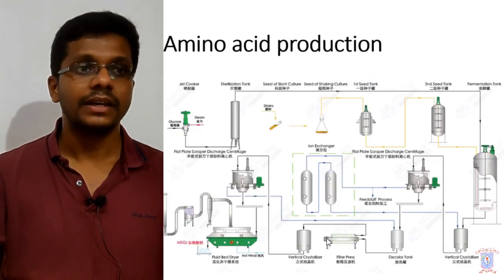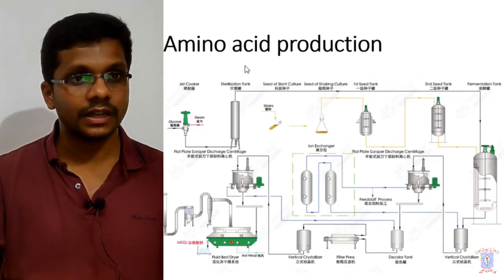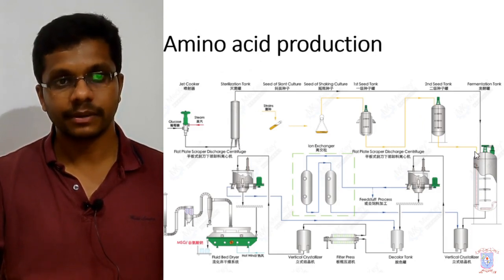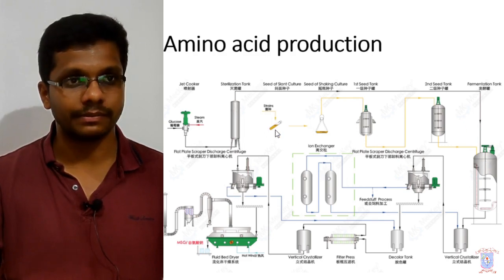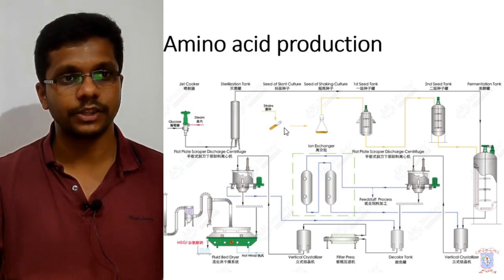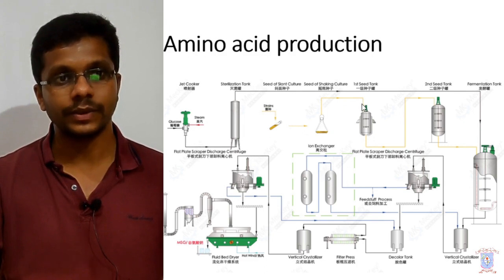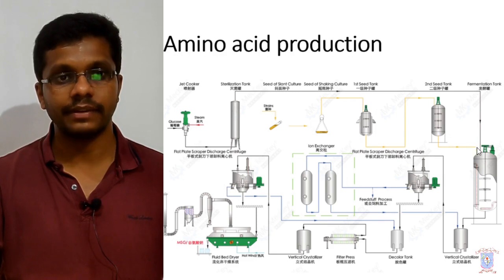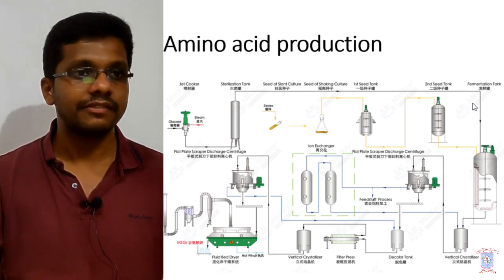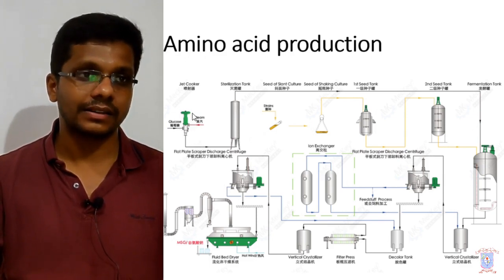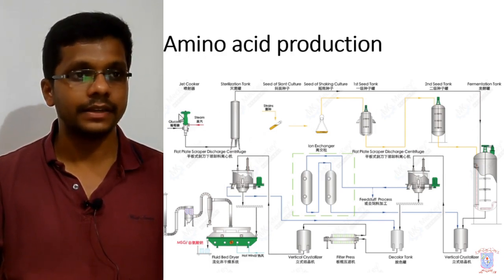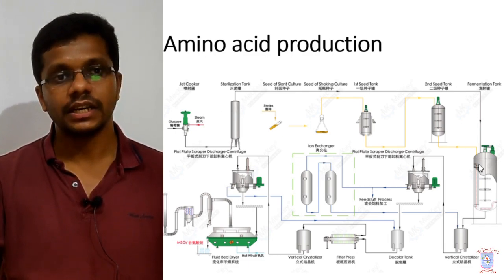Here is a flowchart of amino acid production. Here you can find the fermenter where the fermentation occurs. Before that is the inoculum development part — the inoculum was in a test tube, then put into a conical flask, then into a small seed fermenter, then into a larger seed fermenter, and finally into the fermenter. There is also another line here for the raw materials: raw materials are first combined, formulated, then sterilized, then pumped into the fermenter.